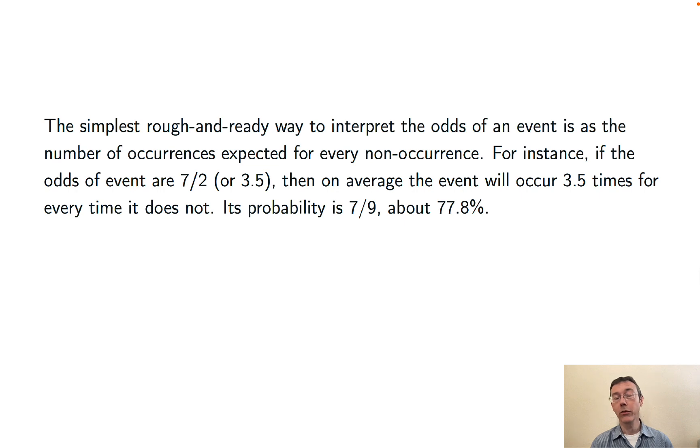In this case, of course, the probability is 7 ninths. When I see odds of 7 to 2, I'm thinking 7 occurrences, 2 non-occurrences, 9 total. So the probability of 77.8% corresponds to the odds of 3.5.